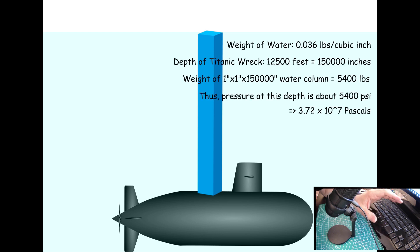The weight of water is about 0.036 pounds per cubic inch. The depth of the Titanic wreck is about 12,500 feet. So, that works out to be around 150,000 inches. And so, the weight of a one inch by one inch by 150,000 inch column of water is 5,400 pounds.